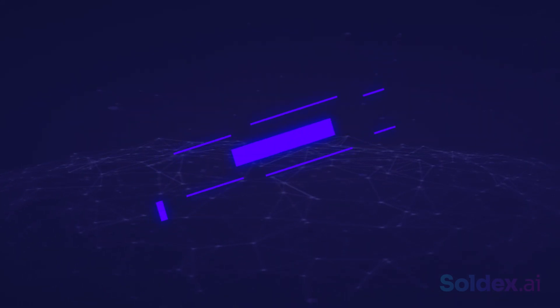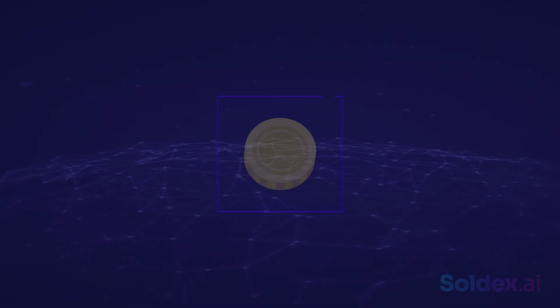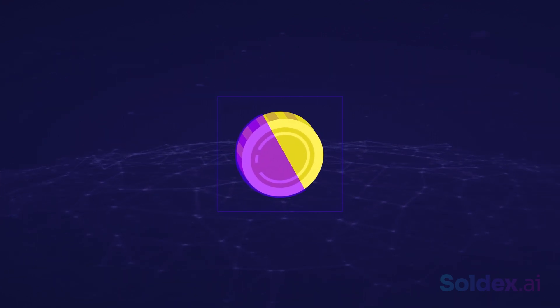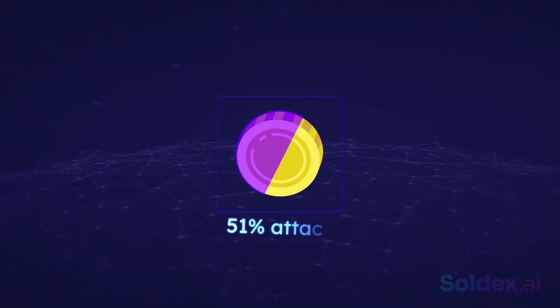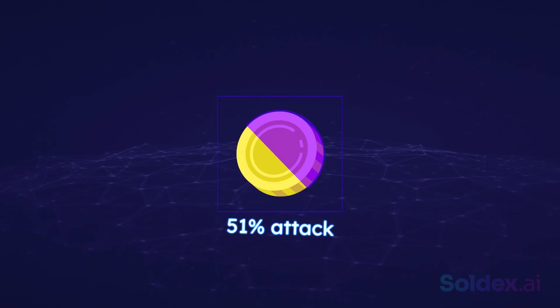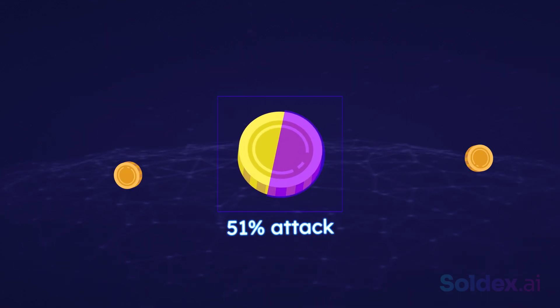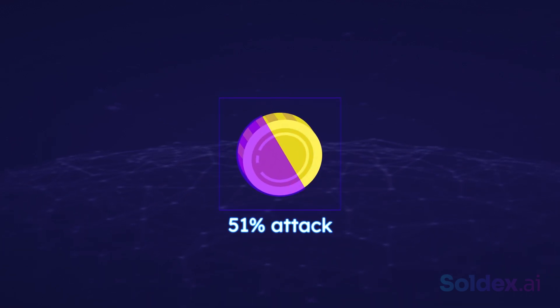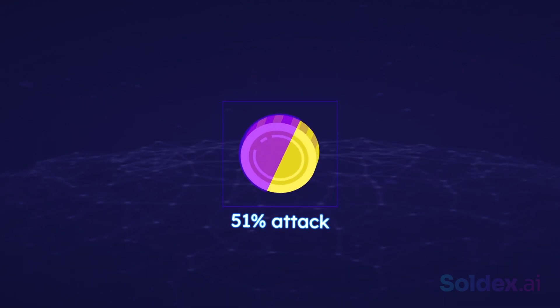To successfully take over the network and approve fraudulent transactions, you must possess more than 50% of the coin's circulating supply. This is also known as the 51% attack. However, this is highly unlikely and very unproductive because it involves a whole lot of money. Also, it will force the value of the currency to drop. You'd end up spending a lot of money and achieving nothing.